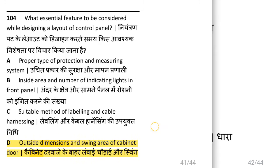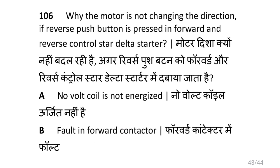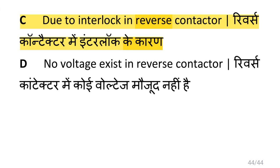Why do power and control wirings run in separate raceways? To reduce radio interference. Why does the motor not change direction if the reverse push button is pressed in a forward and reverse control star delta starter? Due to the interlock in the reverse contactor.